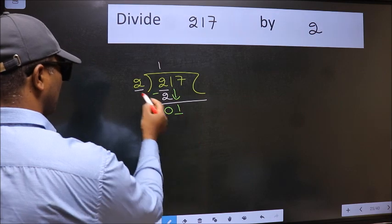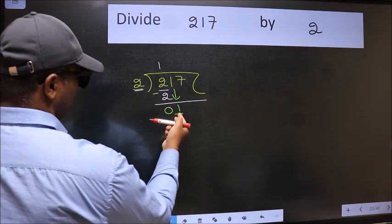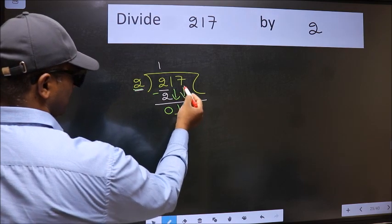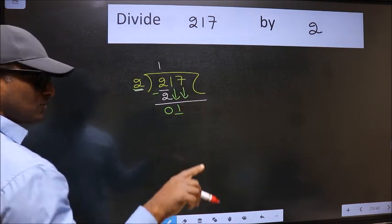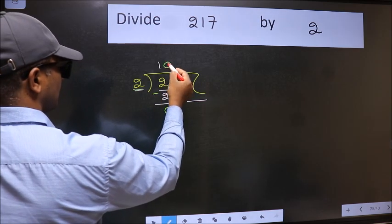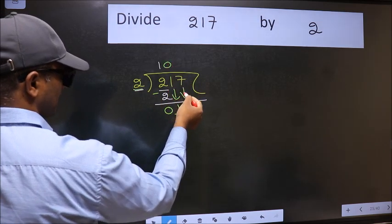Now here we have 1 and here 2. 1 is smaller than 2, so we should bring down the second number. And the rule to bring down second number is we should put 0 here. Then only we can bring down this number.